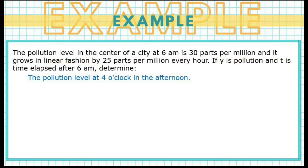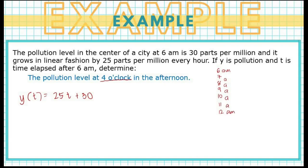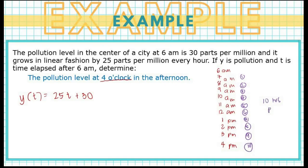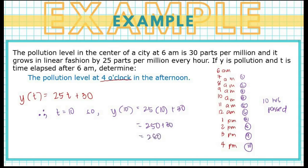We are now tasked to solve for the pollution level at 4 o'clock in the afternoon. Using the function y of t equals 25t plus 30, we count the hours from 6 a.m. to 4 p.m., which is 10 hours. So we evaluate y of 10 equals 25 times 10 plus 30, which equals 250 plus 30, giving us 280. Therefore, the pollution level at 4 o'clock is 280 parts per million.